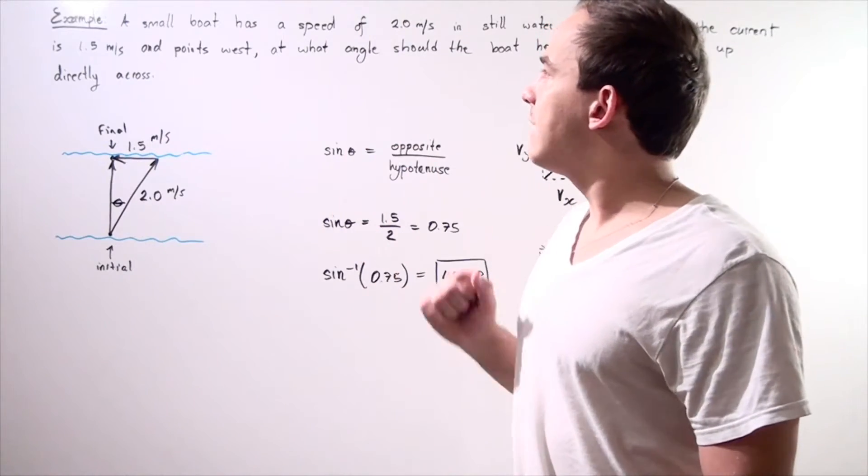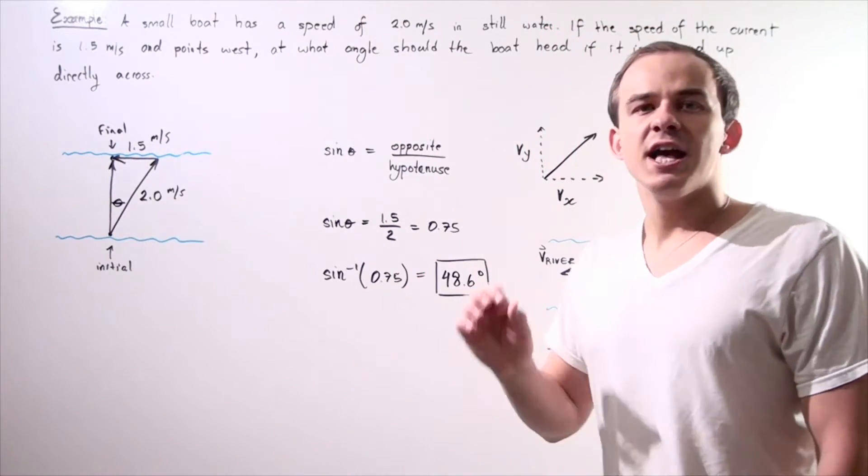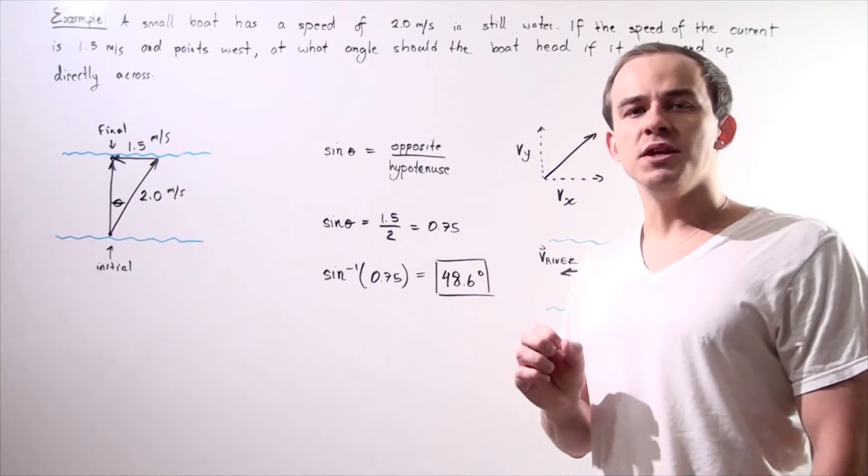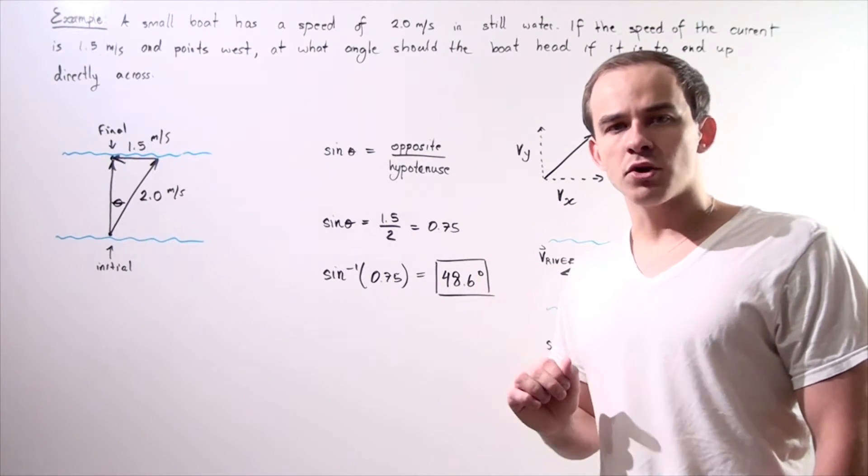Let's suppose that we have a small boat in a river that has a speed of 2 meters per second in still water.